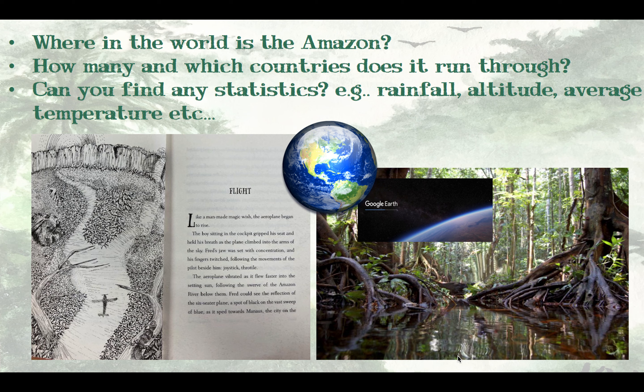The first chapter is called Flight. Using this chapter as a stimulus, the children used atlases to find the Amazon. I gave them a number of questions to explore, and they then used Google Earth to produce zoom maps to locate the Amazon River.